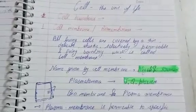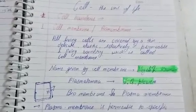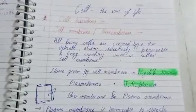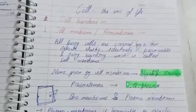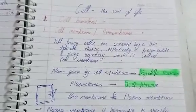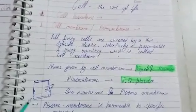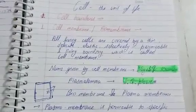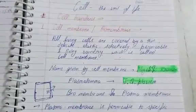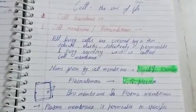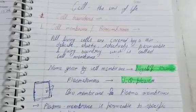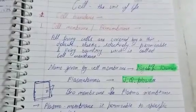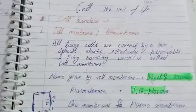Hello students. In the last video we studied about the introduction of cell and structure of cell. Now I will tell you about the structure of cell. The first part of the structure of cell is cell boundaries or cell envelope. There are two types of cell boundaries: first is cell membrane and second is cell wall.